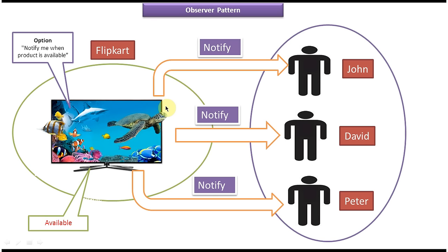This is the best example of Observer Design Pattern. As per Observer Design Pattern, there are two important components: the first is the subject and the second is the observer. In this case, the product is called the subject and these persons are called observers. The observers have to register to the subject — here, John, David and Peter registered to the notification option. Then whenever there is a state change in the subject, it sends a notification to all observers. When the status changed from not available to available, the subject sent an email notification to all observers saying the LED product is now available.